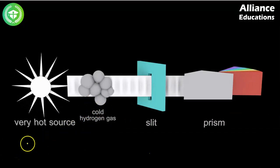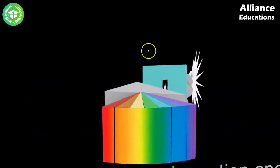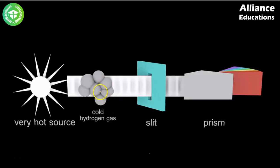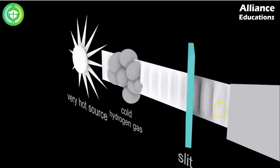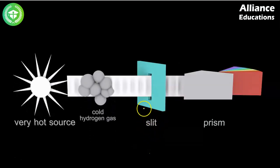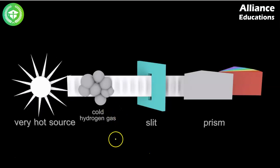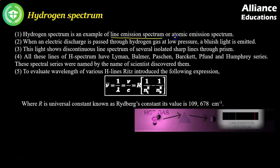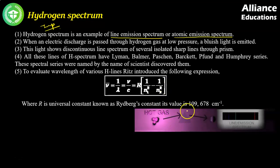Then हमें study करना है hydrogen spectrum. So hydrogen spectrum में, अगर हम एक light source के सामने cold hydrogen gas expose करते हैं, so cold hydrogen gas some amount of wavelength absorb करेगा and उसमें का electron excited state में जाएगा. Remaining light को prism में से pass करके analyze करे तो absorption spectrum मिल रहा है — कुछ missing lines दिख रही हैं जो wavelength hydrogen gas ने absorb कर ली हैं. But remember it is very important — hydrogen spectrum is an example of line emission spectrum, and atomic emission spectrum. Hot hydrogen gas light emit करेगी and उसे analyze करने पे जो spectrum मिलेगा उसे line emission spectrum कहा जाता है.